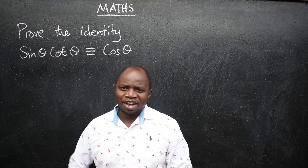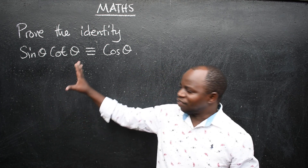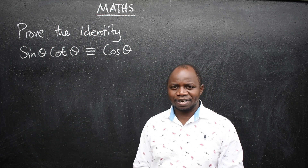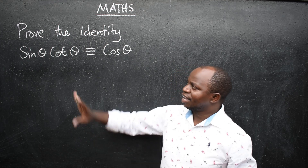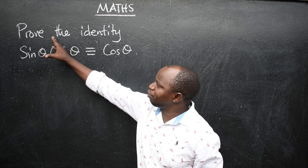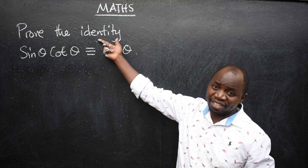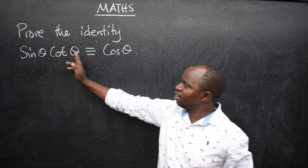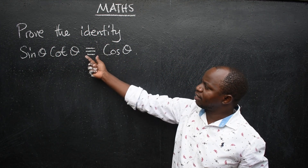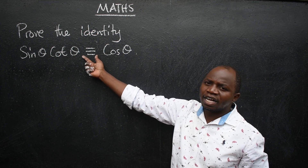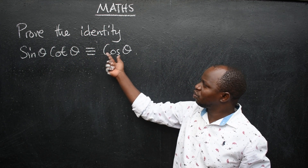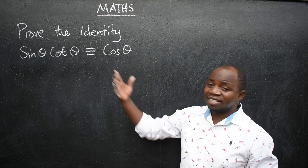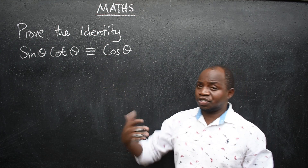Hello students. We have a question here. This is mathematics. The question says we have to prove the identity: sin theta times cot theta is identical to cos theta. This is trigonometry.